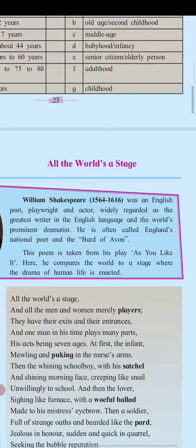The central idea of the poem is that each man has various roles to play throughout his life, as the poem is written as a metaphor for life. It shows that life is arranged in a particular order wherein each individual lives his life in different phases. It also highlights the theme of the constant changes that take place throughout our lives.